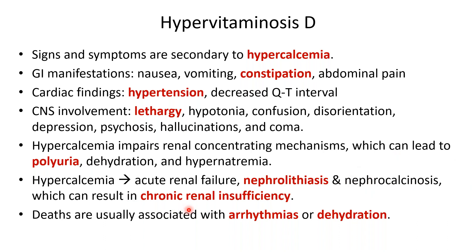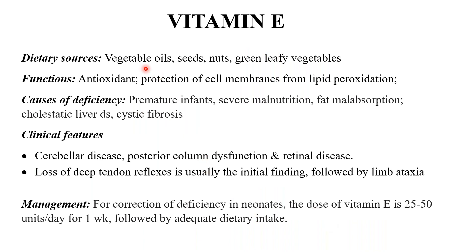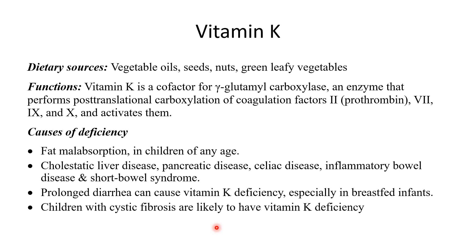Vitamin E dietary sources include vegetable oils, seeds, nuts, and green leafy vegetables. It functions as an antioxidant protecting cell membranes from lipid peroxidation. Deficiency is seen in premature infants, severe malnutrition, fat malabsorption, cholestatic liver disease, and cystic fibrosis. Features include cerebellar ataxia, posterior column dysfunction, loss of deep tendon reflexes, limb ataxia, and retinal disease. Correction: 25–50 IU of vitamin E per day.